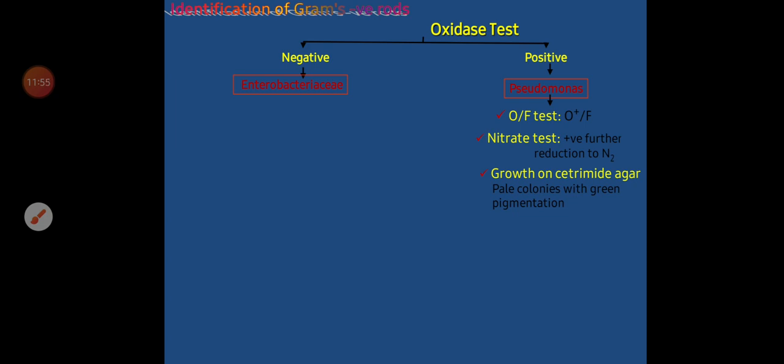The second step in the identification diagram is to differentiate between lactose fermenters and non-lactose fermenters within Enterobacteriaceae. MacConkey agar and triple sugar iron (TSI) agar are used for this purpose. Lactose fermenters produce pink colonies on MacConkey agar and an acid/acid (yellow/yellow) reaction on TSI. Non-lactose fermenters produce colorless colonies on MacConkey and an alkaline slant over acid butt (red over yellow) on TSI. If the microorganism produces H2S, it shows as a black precipitate in TSI.